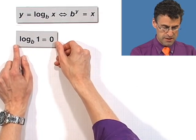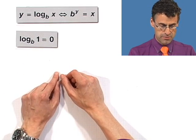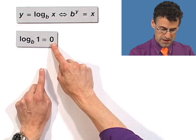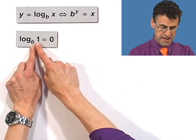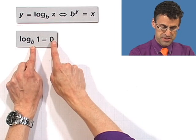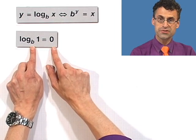First of all, log base b of 1 is always going to be 0. Why? Because log is the exponent that I have to raise b to to get 1. So b to what power gives me 1? Well, b to the 0 equals 1. So that's why this is true.